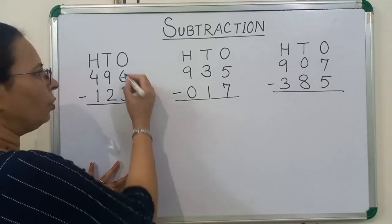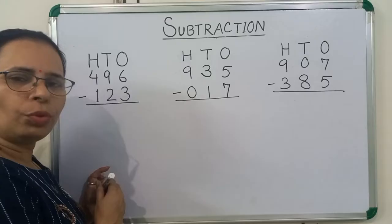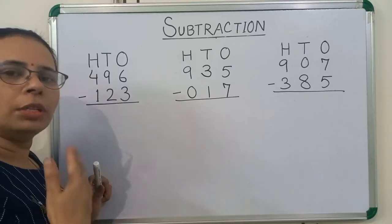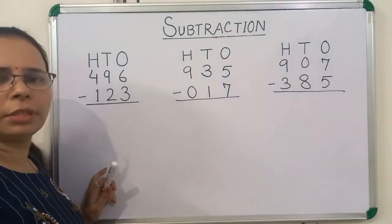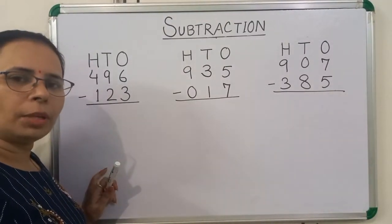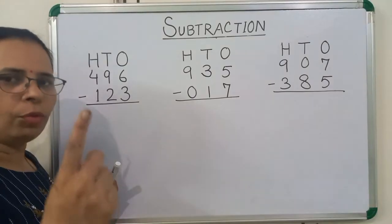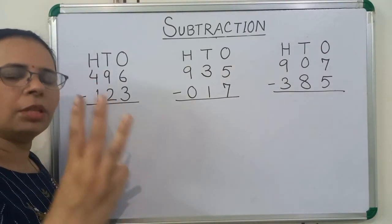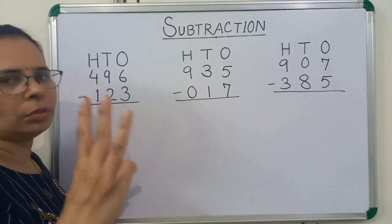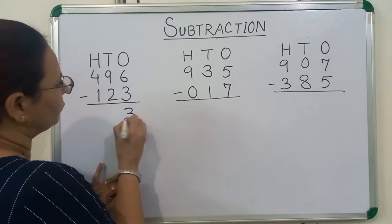We will subtract 3 from 6. So what we will do, we will count after 3 till 6. So what is the after number of 3? 4, 5, 6. So how many fingers are out? 3. So we will write here 3.